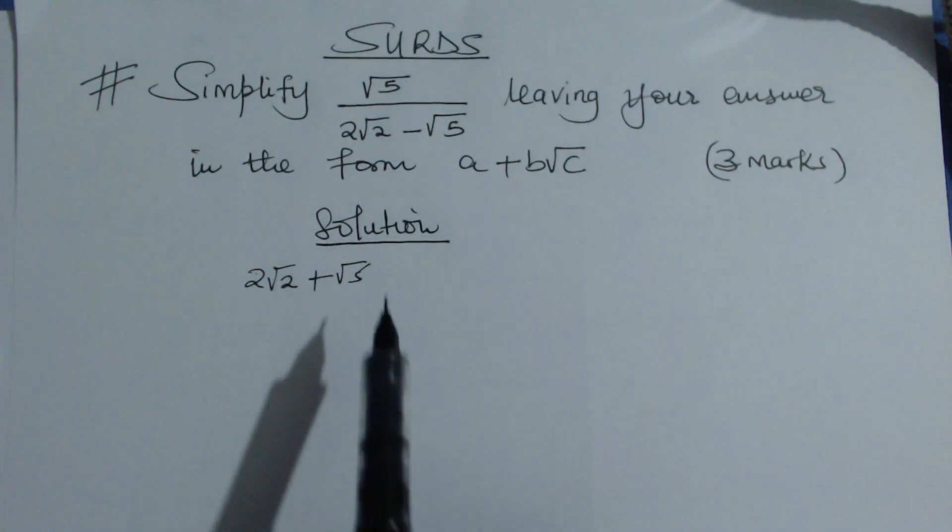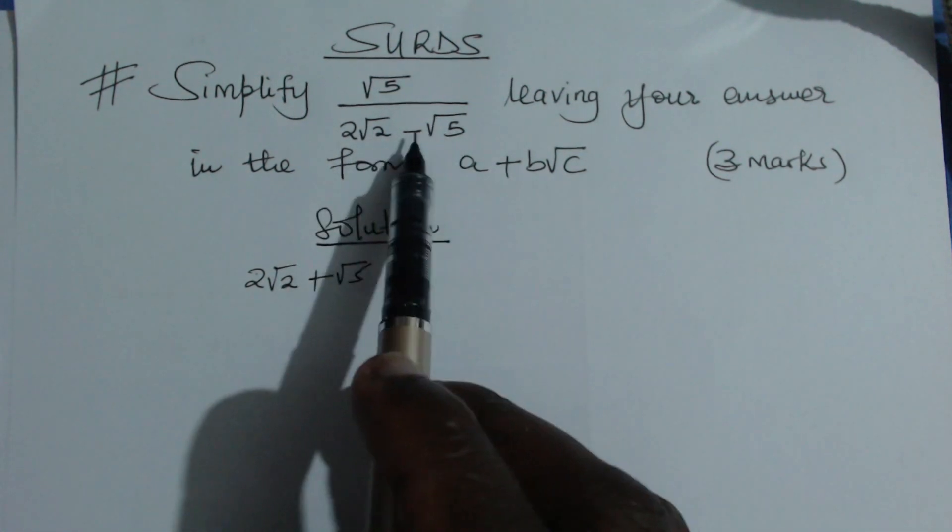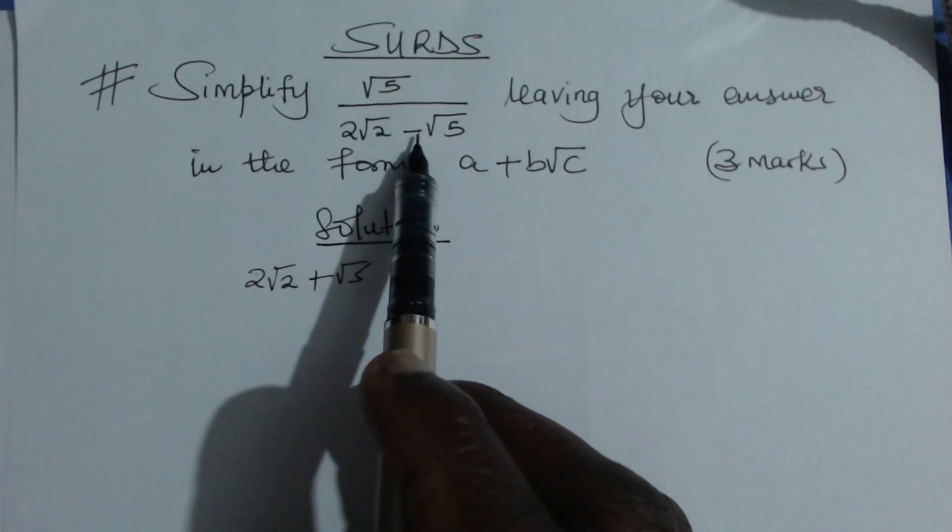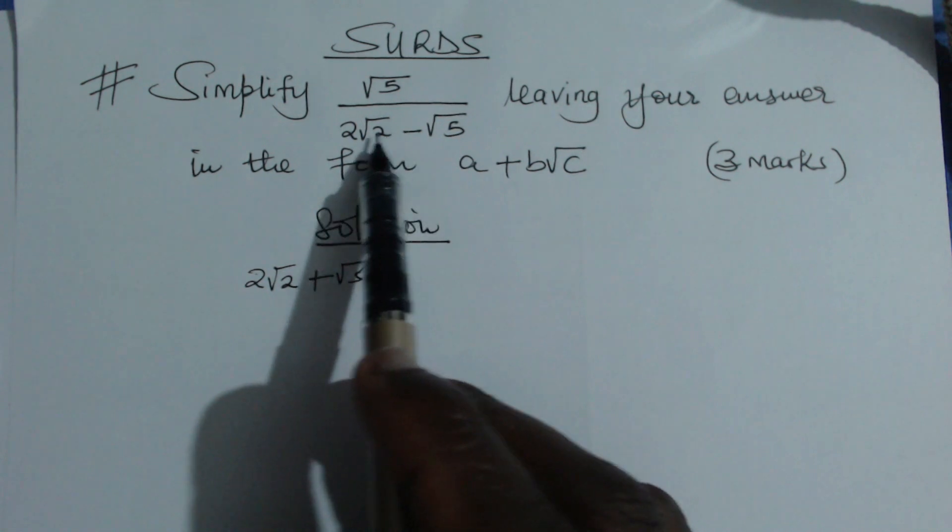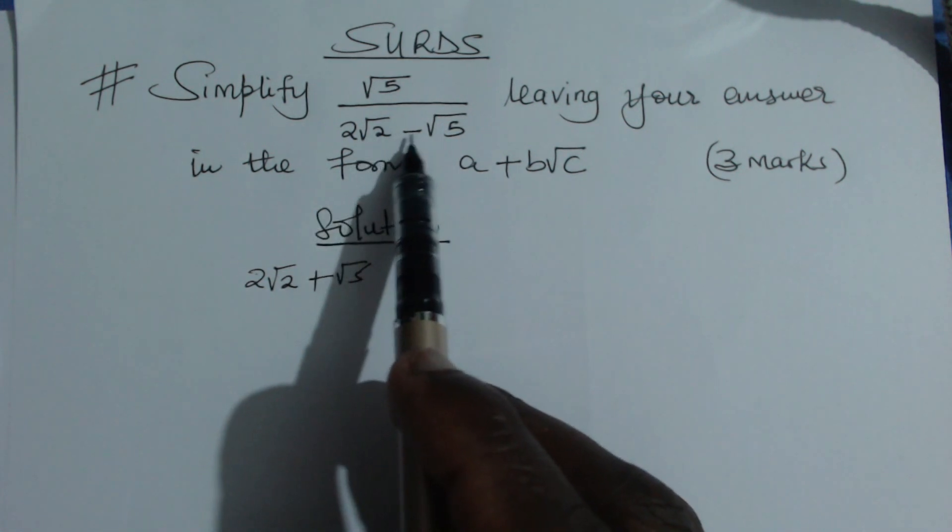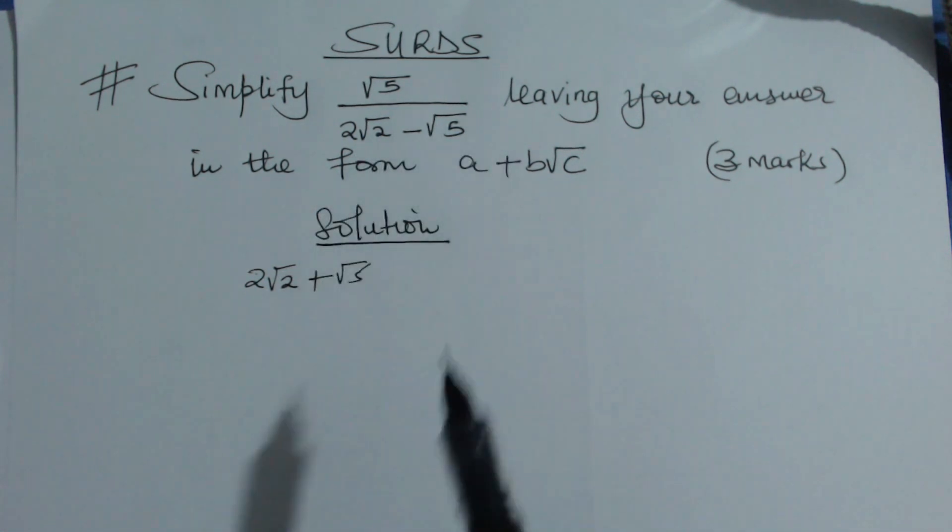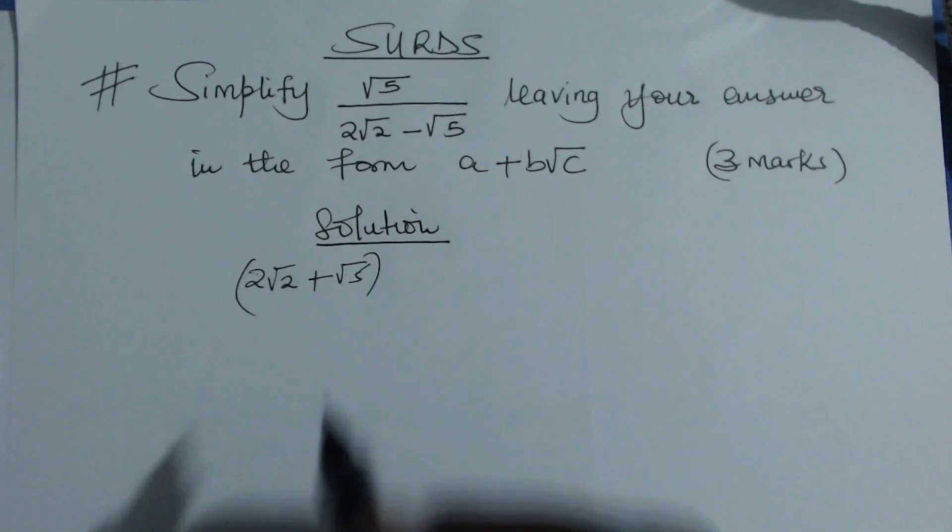...of 5. That is the conjugate of this denominator. If it was a positive, the conjugate would be the same thing with only the negative inserted between the two terms. So we need to multiply both the numerator and denominator with this conjugate.